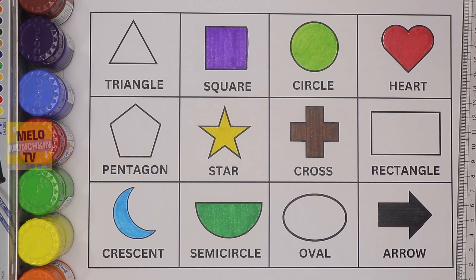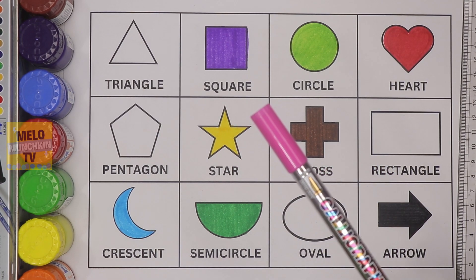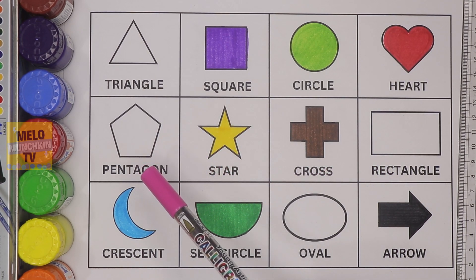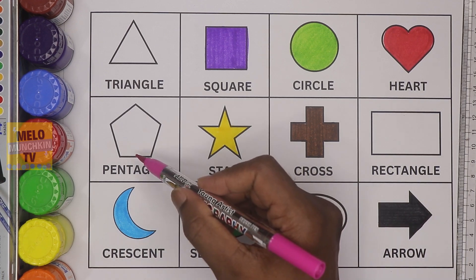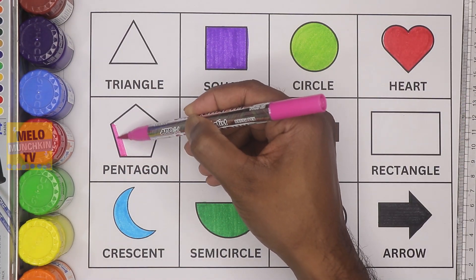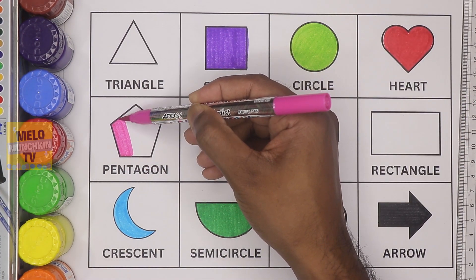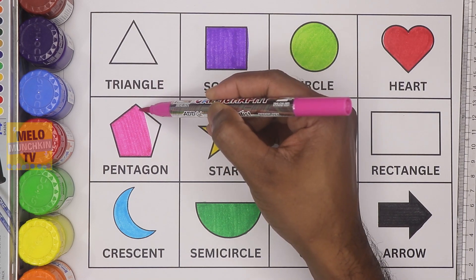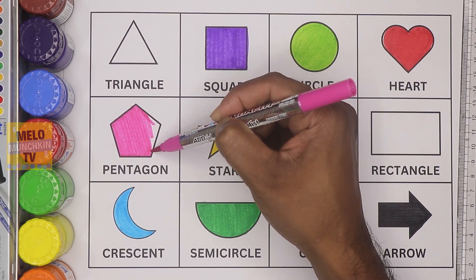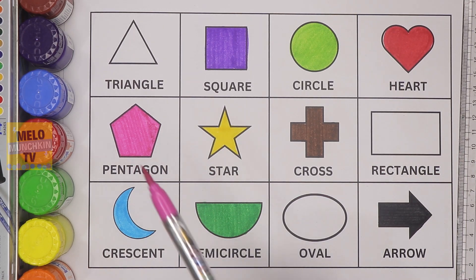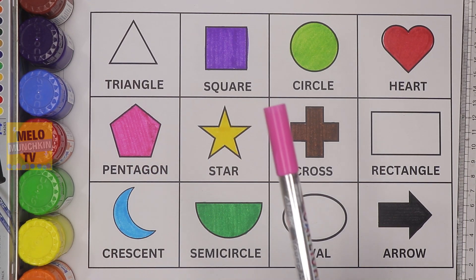Next, I'll go with this color — this is pink — and I'll use this color to fill this shape. This is pentagon. Pentagon has five sides. Okay, so this is pentagon and which color is this? This is pink color.